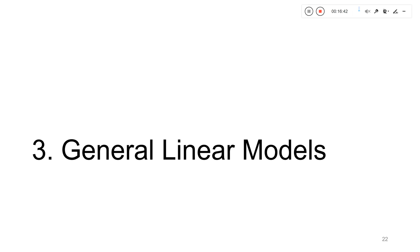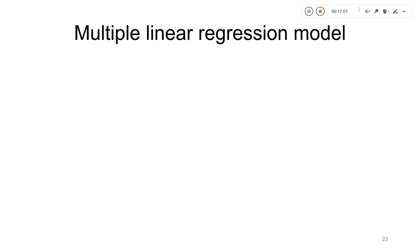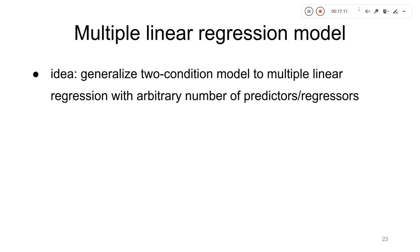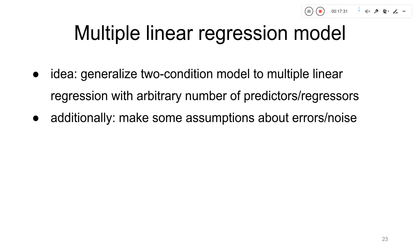We now generalize this model to a framework that can handle arbitrary cases. We extend from a two-condition regression model to a multiple linear regression model with an arbitrary number of experimental conditions and additional variables influencing the signal. We also need probabilistic assumptions about the errors or noise in order to perform statistical inference.